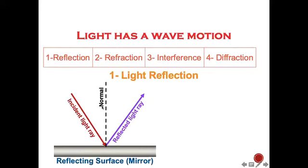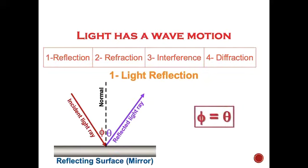This imaginary line is called the normal. The angle subtended between the incident light ray and the normal is called phi. The angle subtended between the normal line and the reflected line is called theta. Note that phi here is a Latin letter used like x, y, z — it has no relation to the mathematical empty-set symbol. The condition for light reflection is that phi must equal theta. Also, the incident ray, the reflected ray, and the normal all lie in one plane and intersect the reflecting surface at one point.